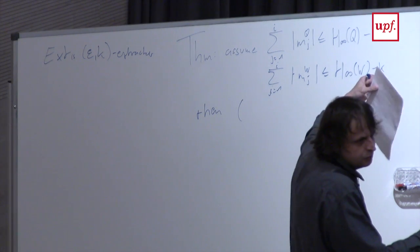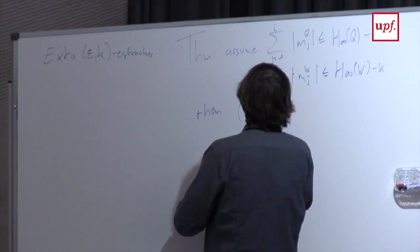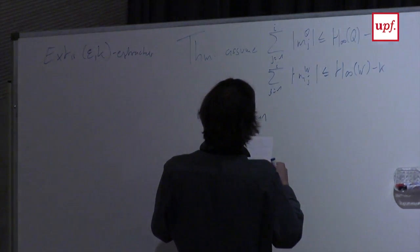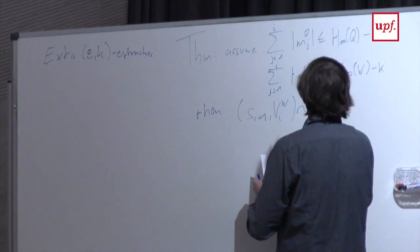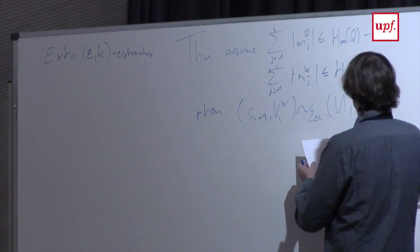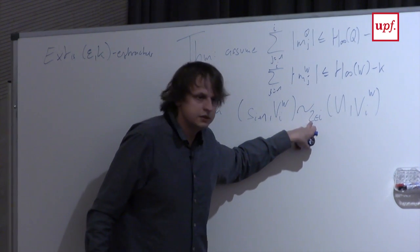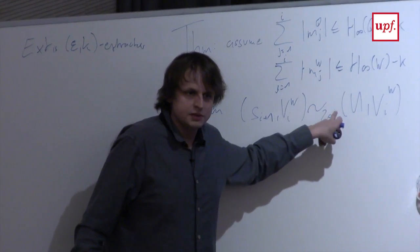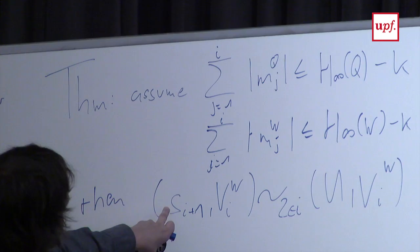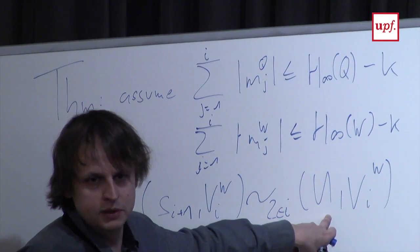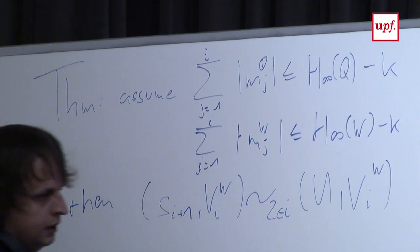S2 is extracted from Q using a seed that is epsilon-far from uniform, so S2 will be 2 epsilon away from uniform. And so on. Therefore S_{i+1}, given Wendy's view up to point i, will be 2 epsilon·i close to uniform. This notation means the distribution of S_{i+1} and the view of Wendy, versus a uniformly random string independent of everything of the same length as S, and the view of Wendy at time i — those two will be 2 epsilon·i close to uniform.